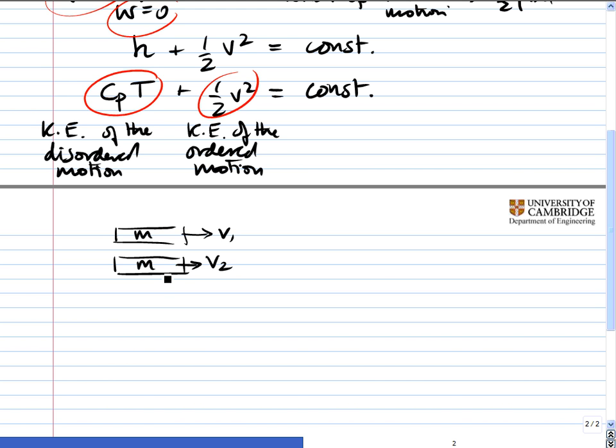Let's think about the kinetic energy of the ordered motion here. It's just a half m v₁ squared, top one, plus v₂ squared for the bottom one. That's of the ordered bulk motion. Now, imagine that they mix.